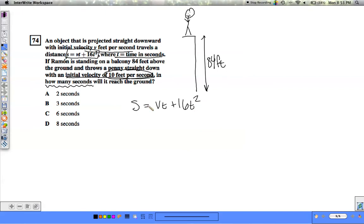This is a very complex problem to be able to solve without any numbers. Well, fortunately it provides us with two numbers. The first one is 84 feet above the ground. So the distance that this penny is going to travel from the top of the balcony to the bottom of the building is going to be 84 feet. The initial velocity is going to be 10 feet per second.